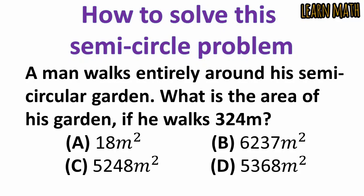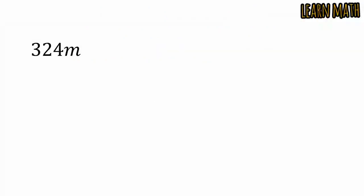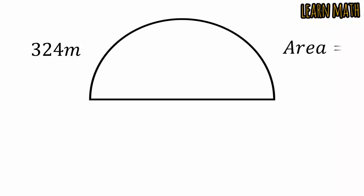Assalamu alaikum, hi everyone! My name is Zayn and you are watching my YouTube channel Learn Math. In today's video we are going to solve this question: a man walks entirely around his semi-circular garden. What is the area of his garden if he walks 324 meters? Before starting the solution, like the video, and if you are new on my channel please subscribe.